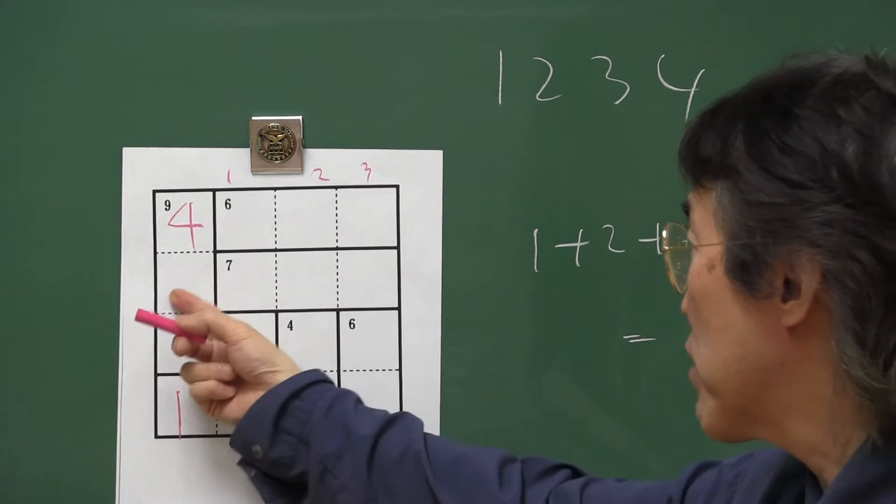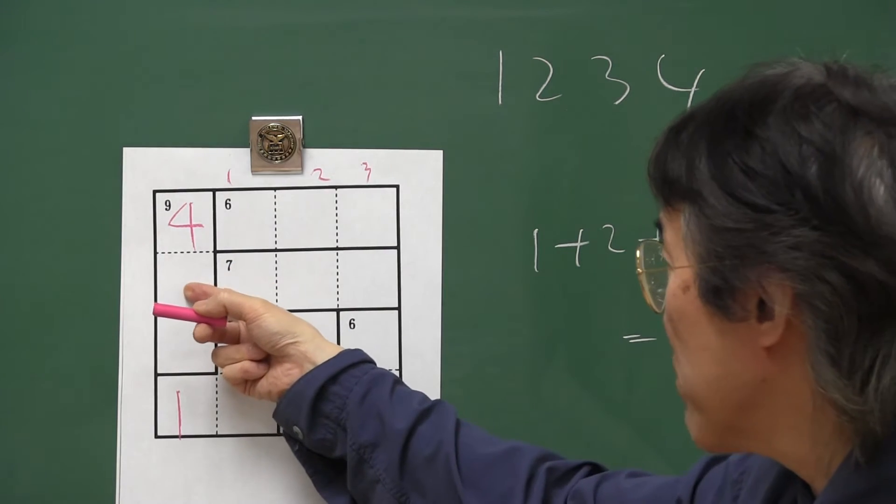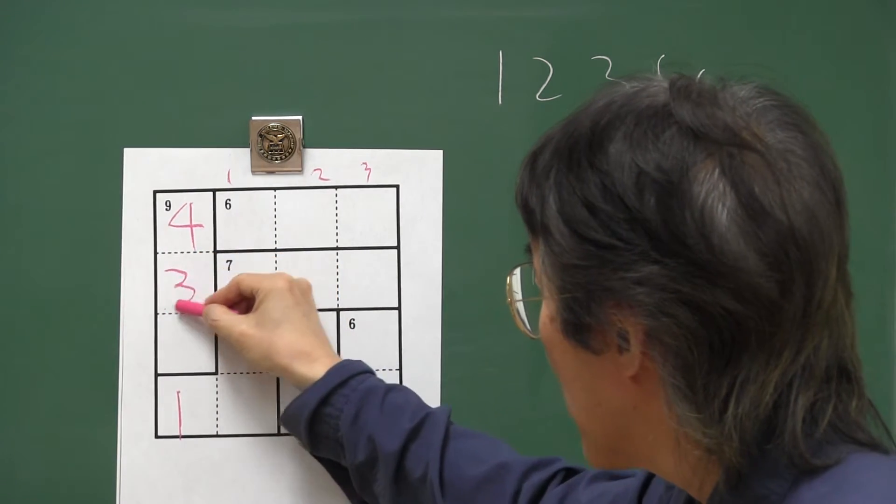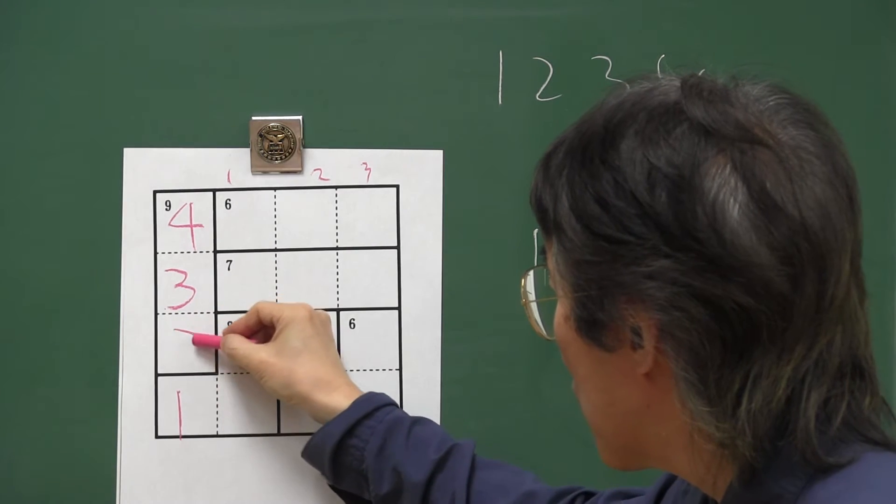From here to here, ten. Here to here, seven. Then this is three. Four, three, one. Then this is two.